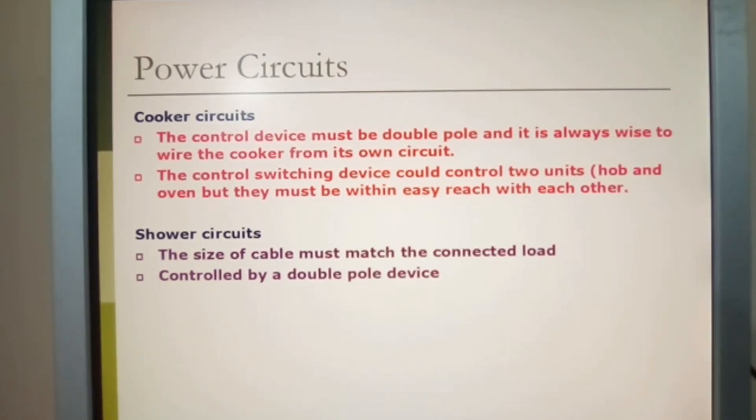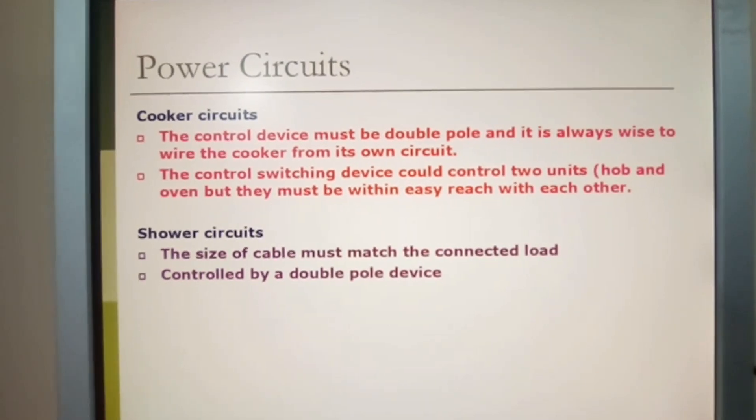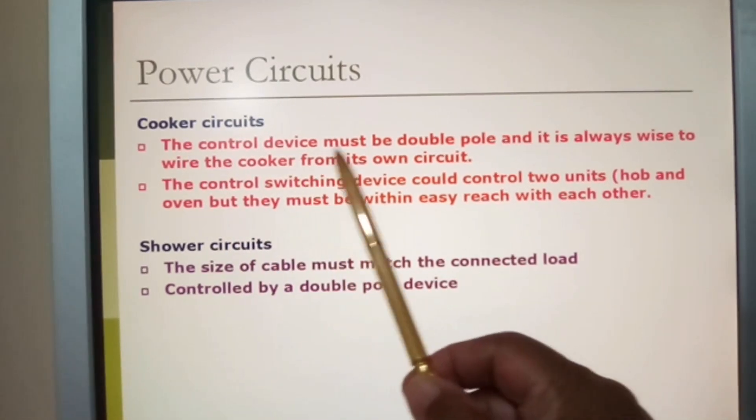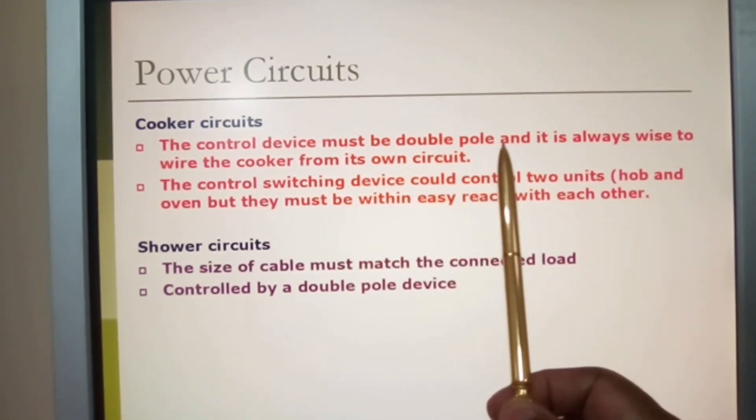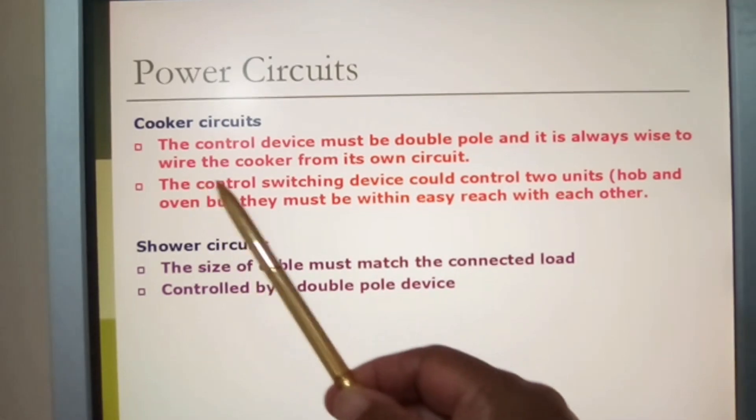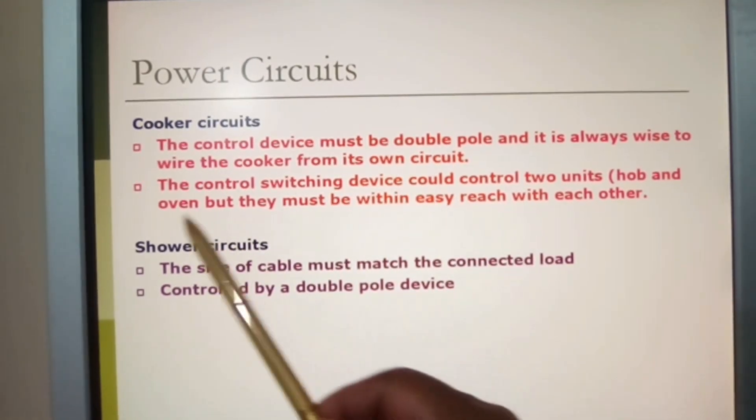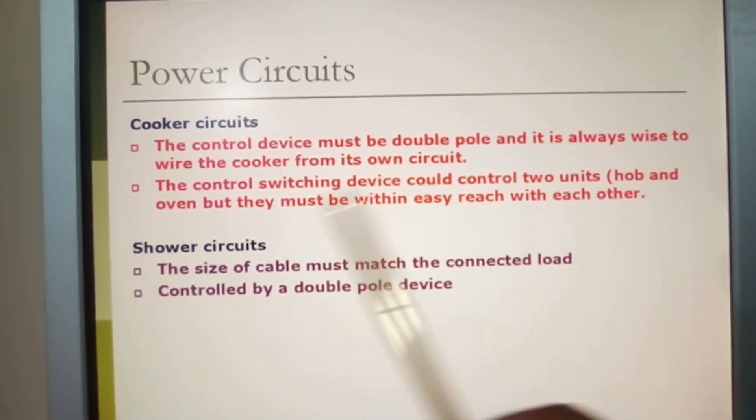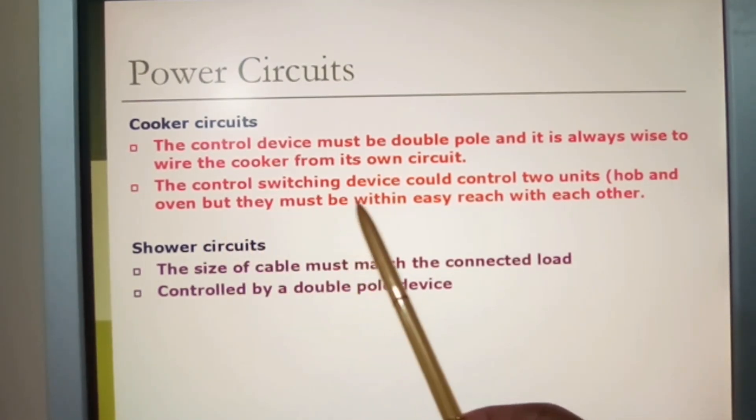Power circuits: cooker circuits. The control device must be double pole and it is always wise to wire the cooker from its own circuit. The control switch device could control two units, hob and oven, but they must be within easy reach of each other.